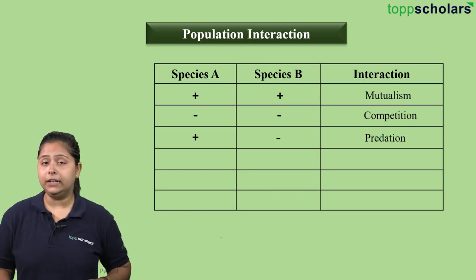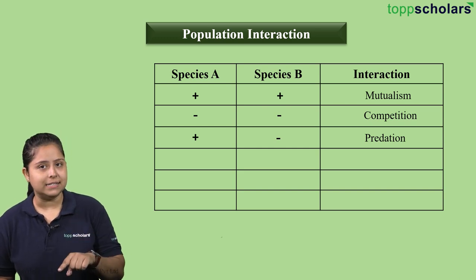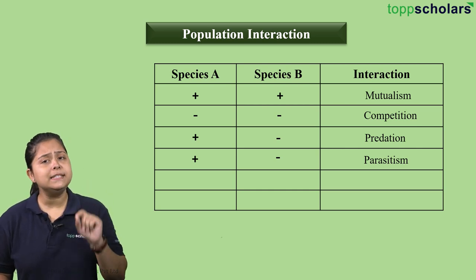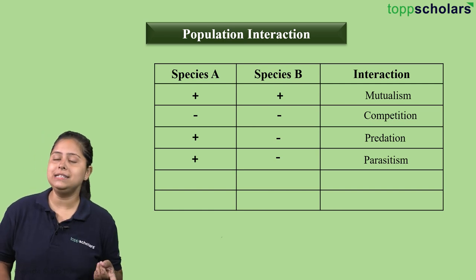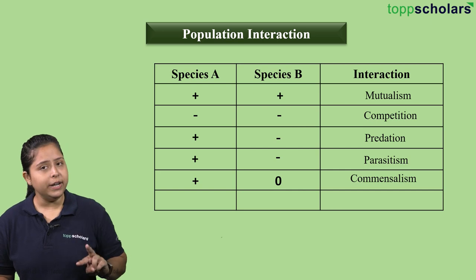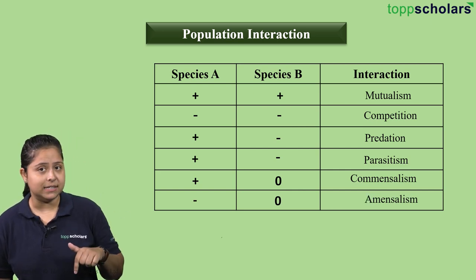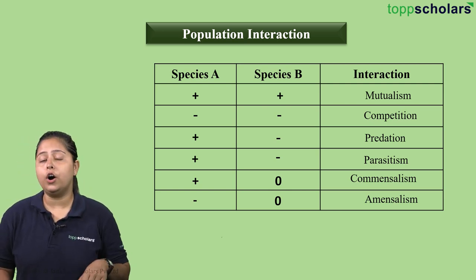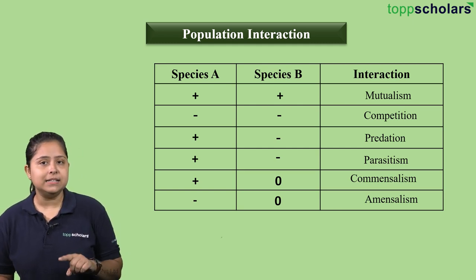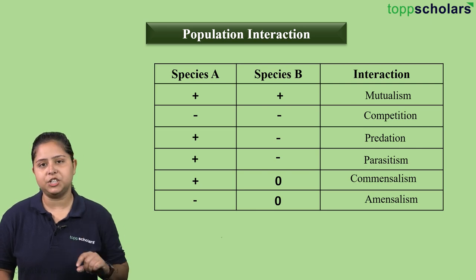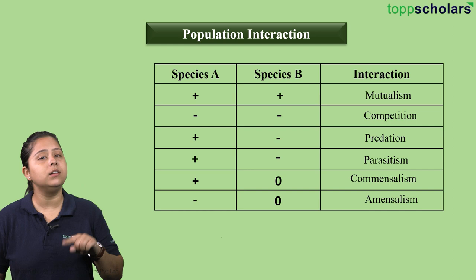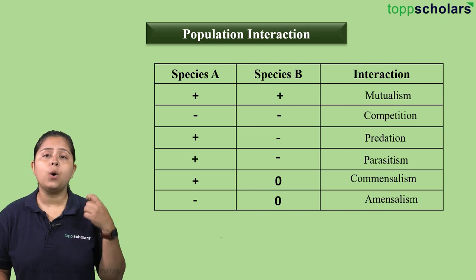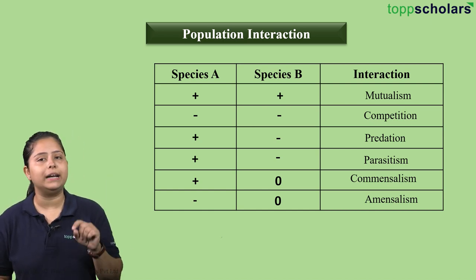Then we have predation — one plus and one minus sign. Next we have parasitism. Remember that predation and parasitism have the same signs: one plus and one minus. Then lastly we have commensalism and amensalism, where one species has a zero sign representing neutral behavior. For commensalism, there is a plus sign for one species, so overall plus and zero.